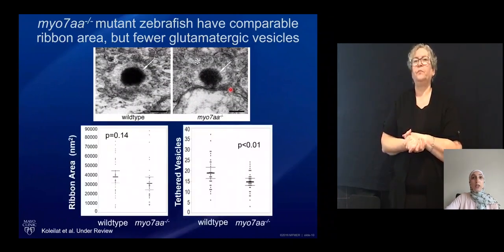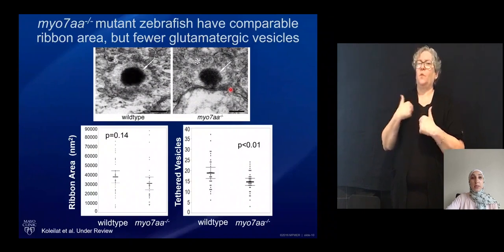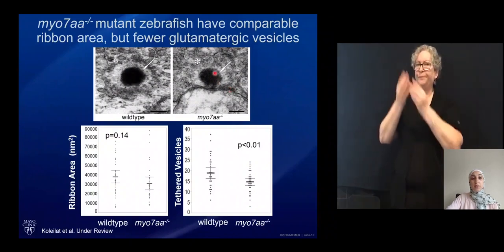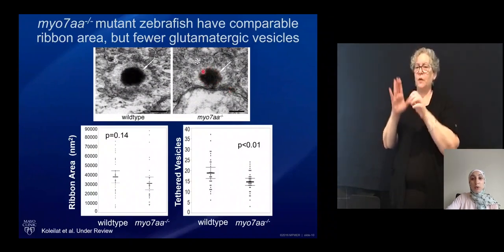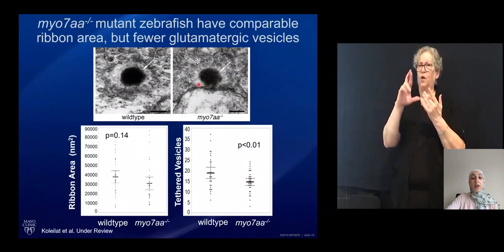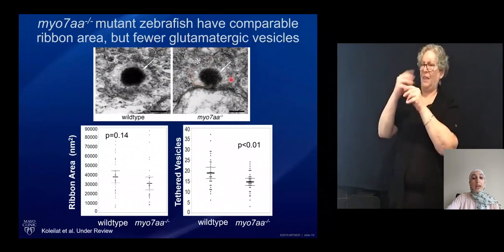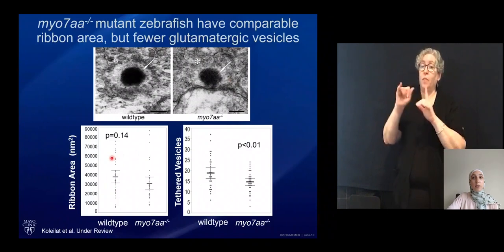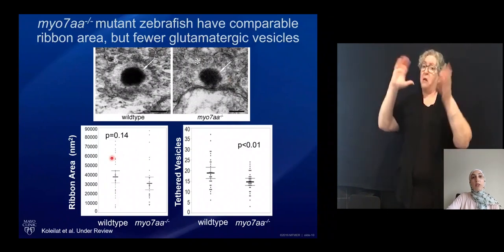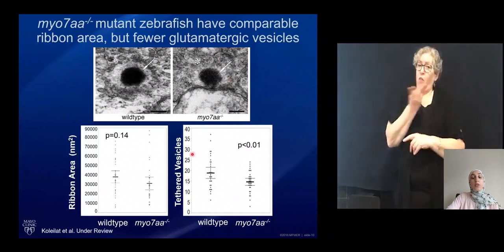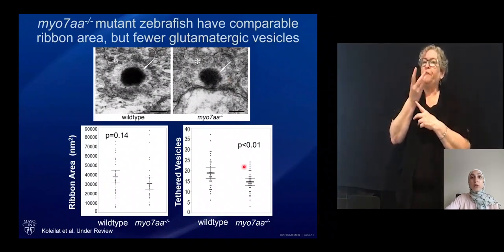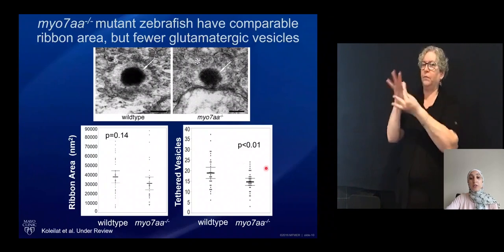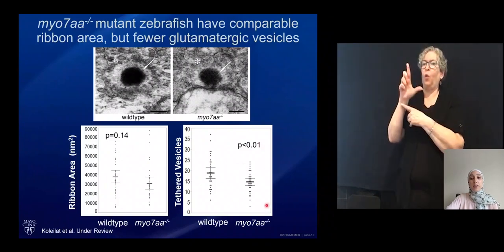We went on to quantify two aspects of these images: the area of that central component ribeye, and the number of vesicles in the halo. We identified that although the ribbon area is comparable between the two groups, there were fewer tethered glutamatergic vesicles in the myo-7a mutants.